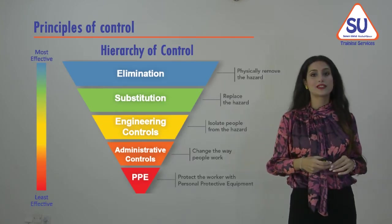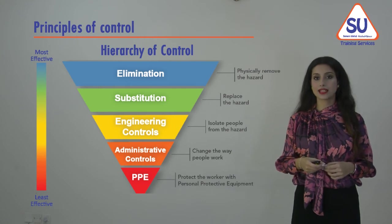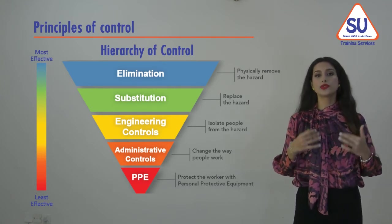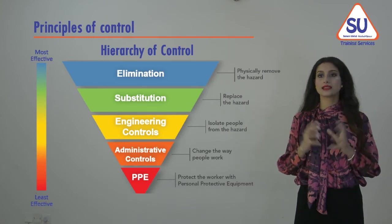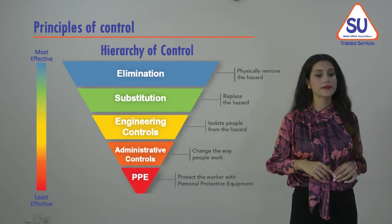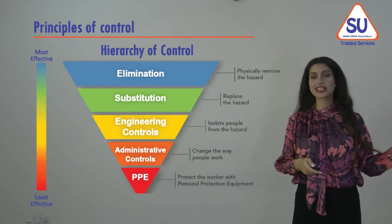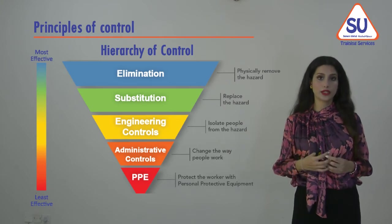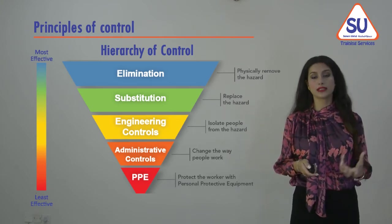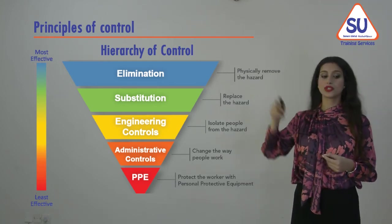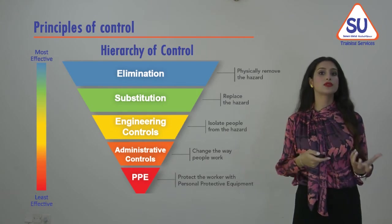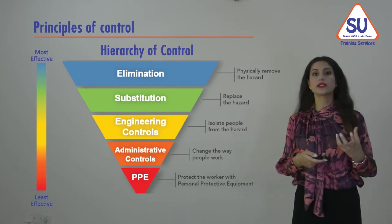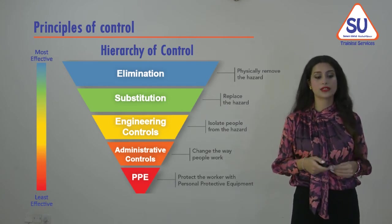The next step is the hierarchy of control measures — the options available to managers and employers to reduce the level of risk. It starts with elimination, the ideal solution for high risks, which means eliminating the activity, material, or equipment causing the hazard. However, elimination is not always practical, which is why the second option is substitution — replacing a harmful chemical or material with a less harmful one, or substituting equipment that creates less risk.